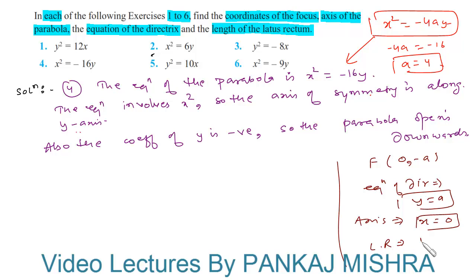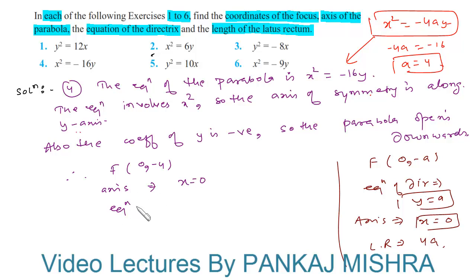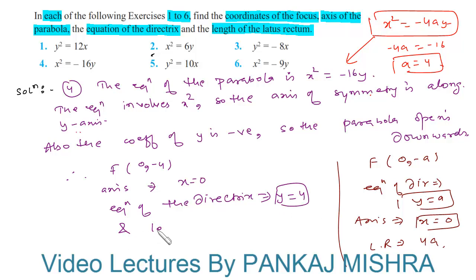Therefore, the focus of the parabola is at (0, −4), the axis of the parabola is x = 0, the equation of the directrix is y = 4, and the length of the latus rectum is 4 × 4 = 16. This completes our solution.